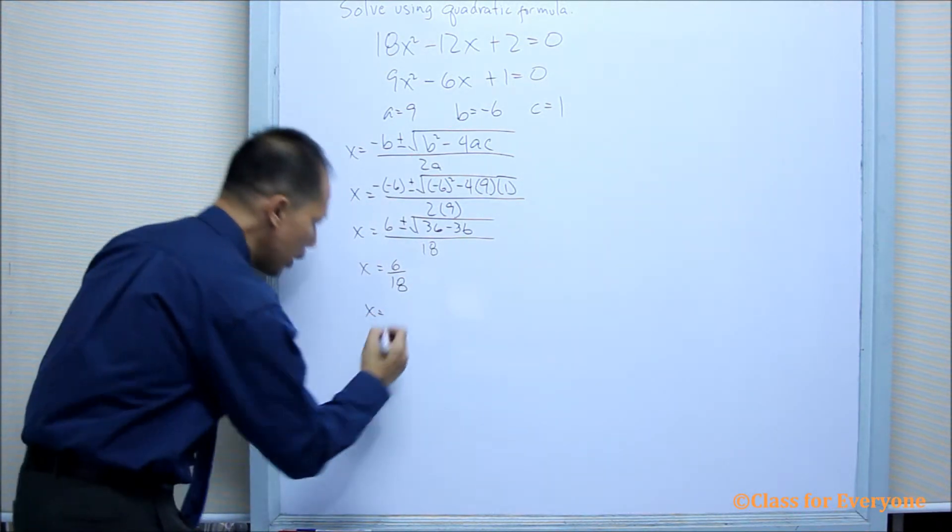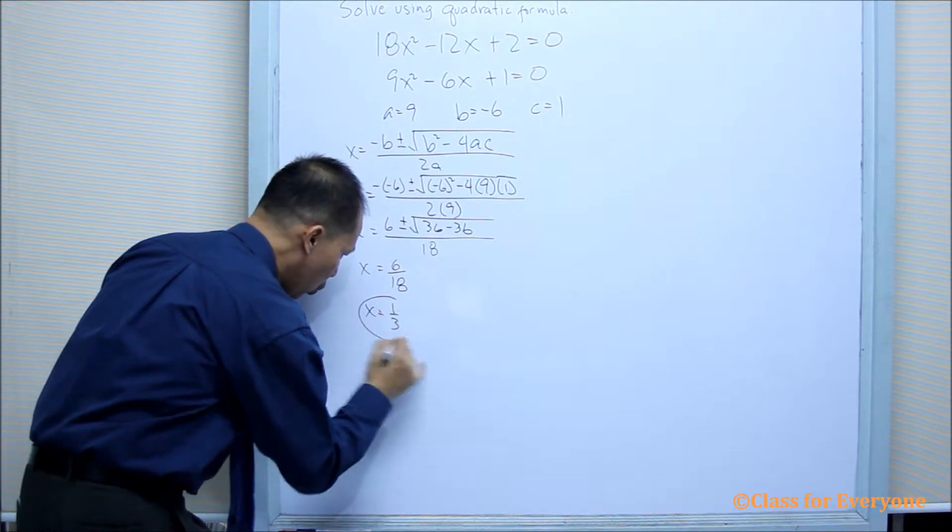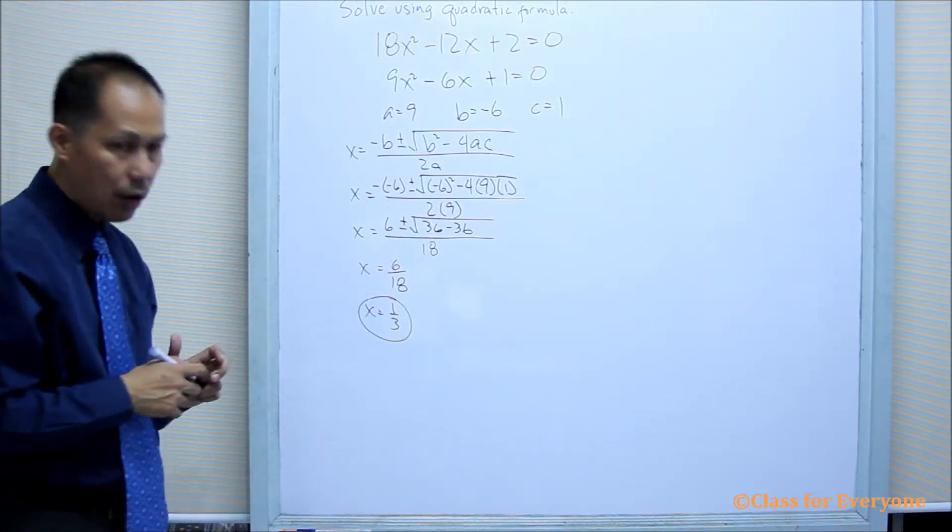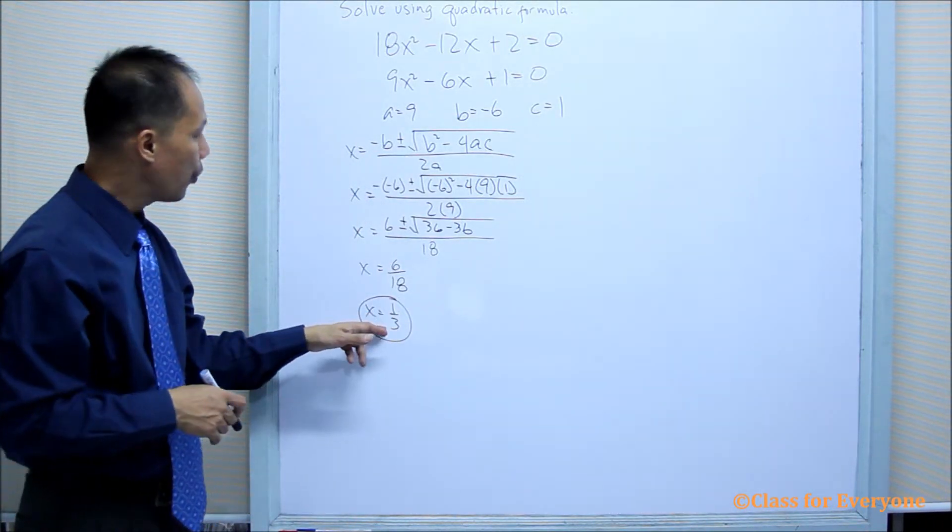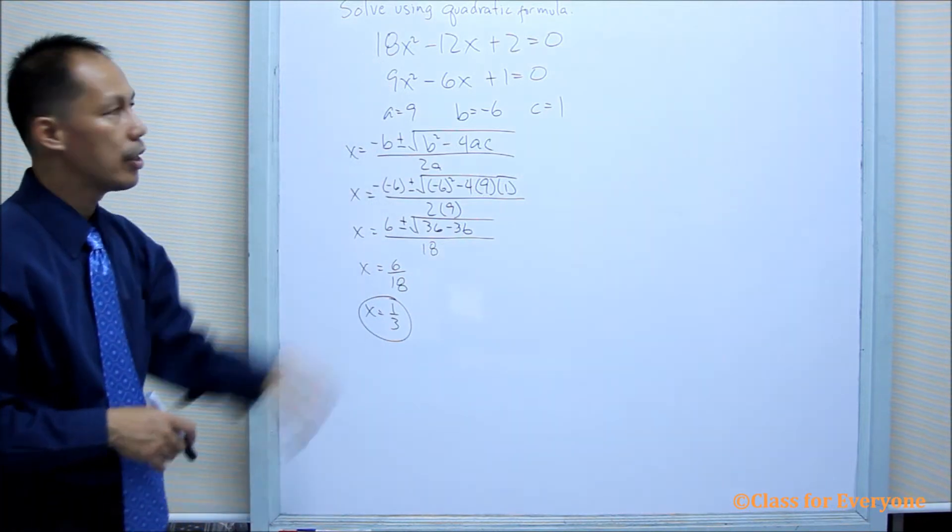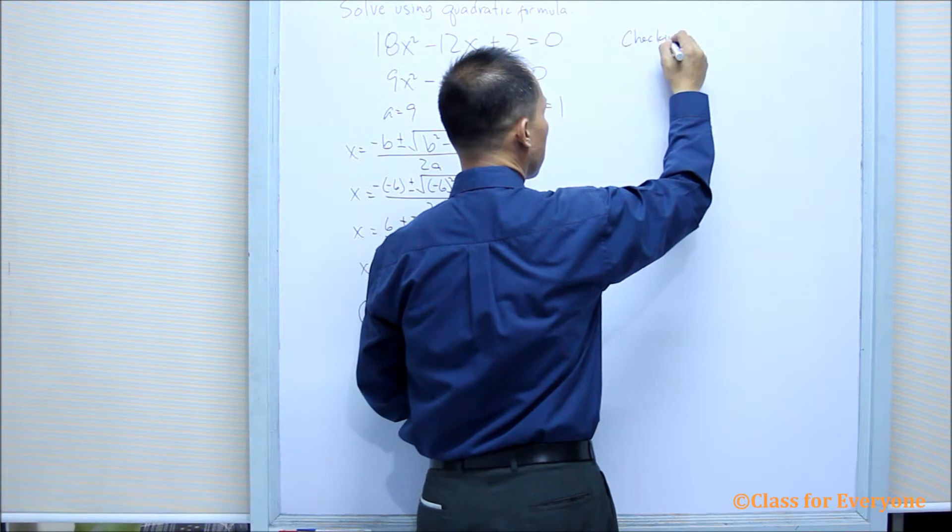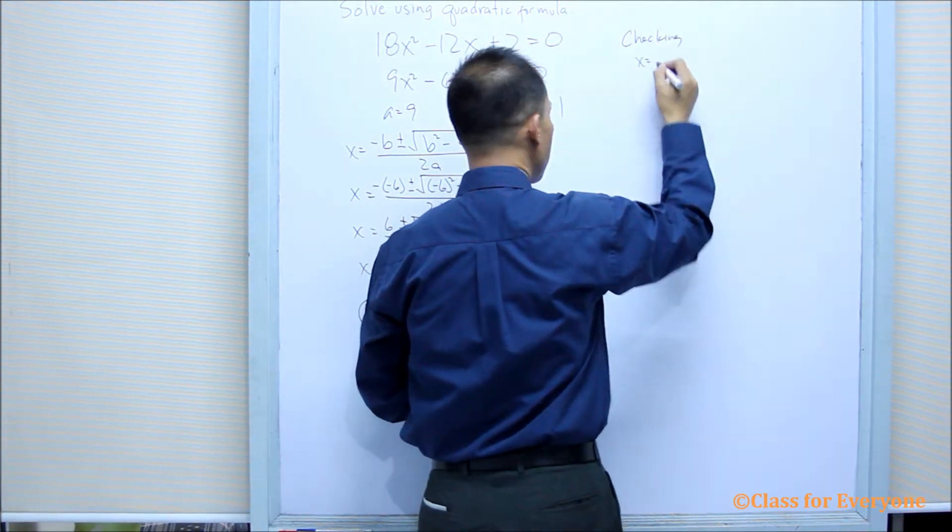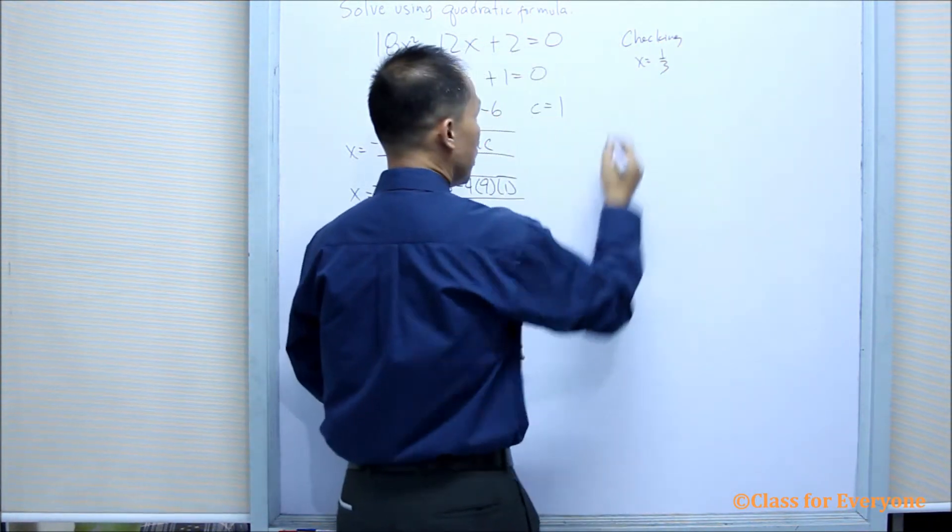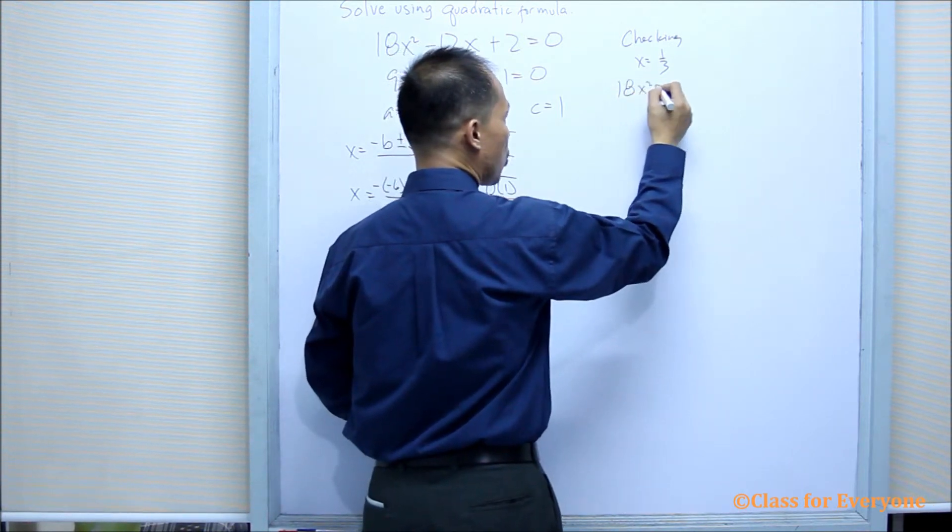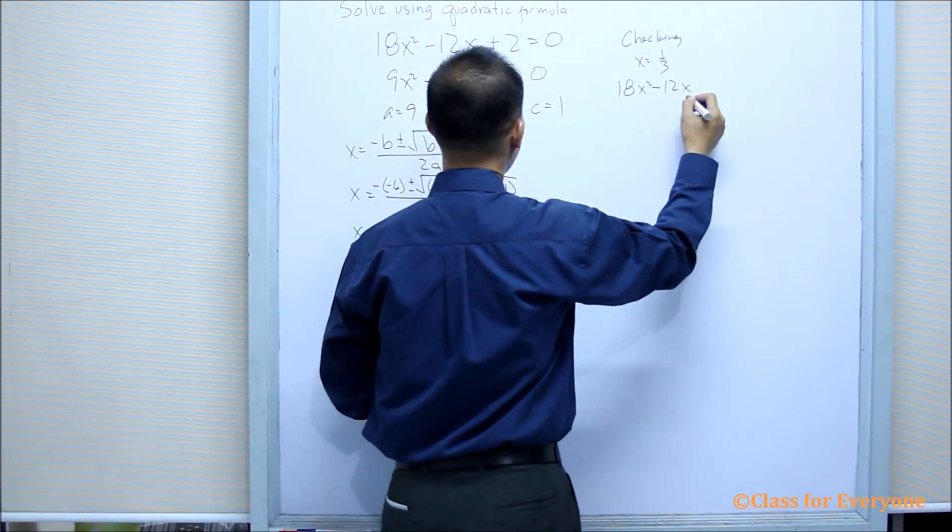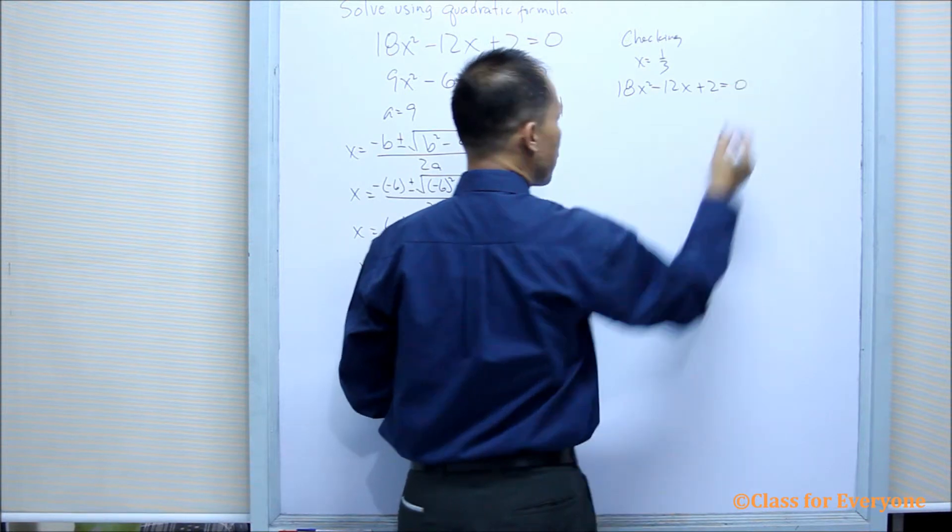Where x will now be equal to 1 third. We are now going to find out if 1 third satisfies our original equation. By checking, when x is equal to 1 third, our original equation, 18x squared minus 12x plus 2 equals 0.